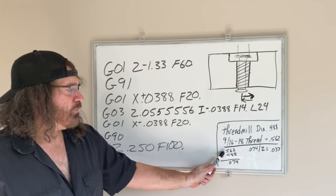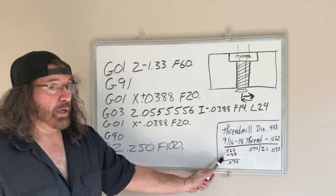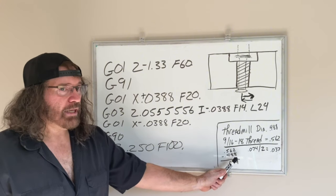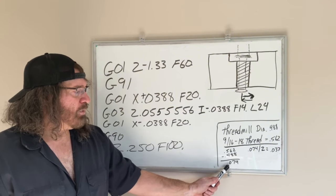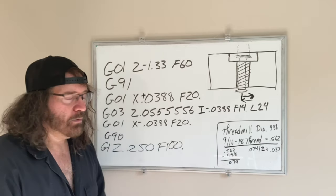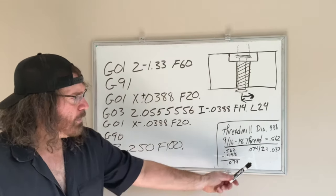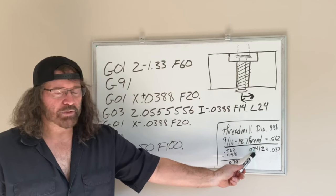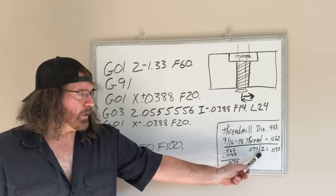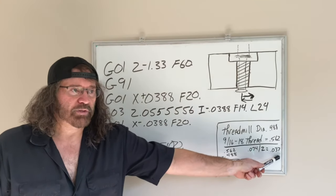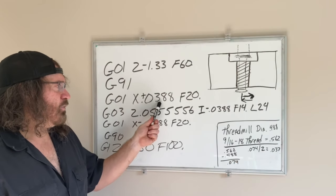From there you take 0.074, you divide it by 2 and you get 0.037. So I originally started out at 0.038.